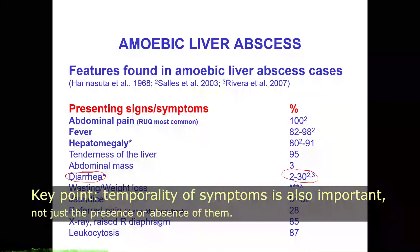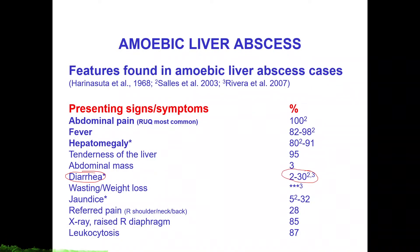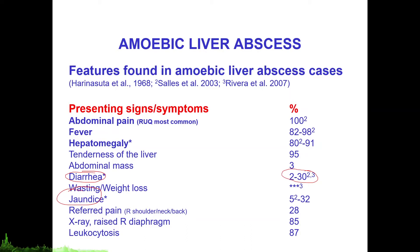Previous history of diarrhea followed by abdominal pain and fever and the other signs and symptoms may point to a higher suspicion of amoebic liver abscess. Jaundice, on the other hand, is an unusual feature, reported in only 5% of cases. Its appearance suggests the existence of large or multiple abscesses, sometimes bacterial infection, and sometimes derangement of hepatic function. Jaundice is primarily an indicator of progressing disease.